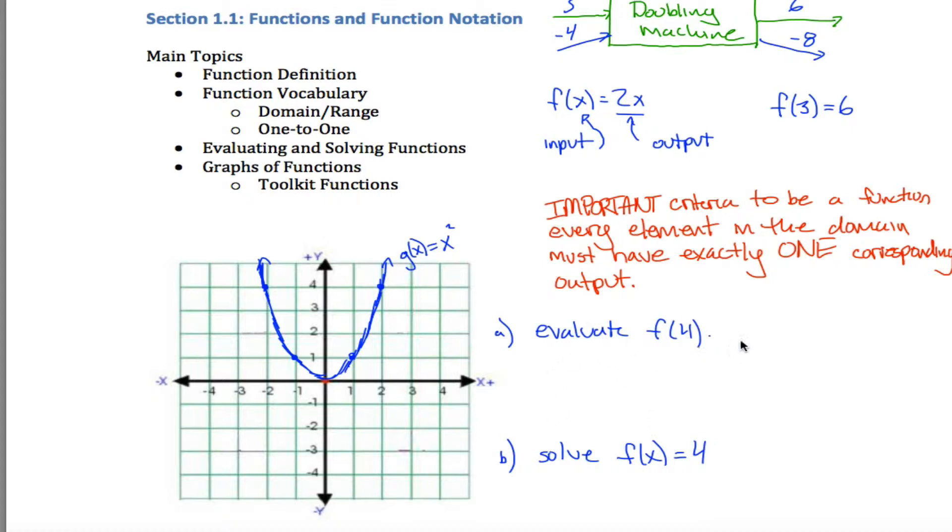This one is telling you that the input is 4, and it asks you to find the output. This one is telling you that the output is 4, and it's asking you to find the input. And that's probably the most common thing people mess up when they're first learning functions is switching up the inputs and the outputs. Remember the input is what is inside these parentheses next to the f. You're putting it into this machine here.